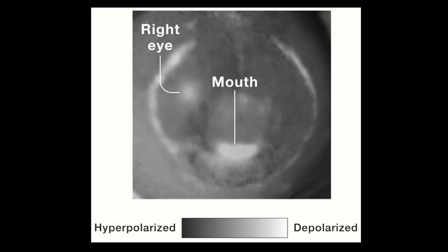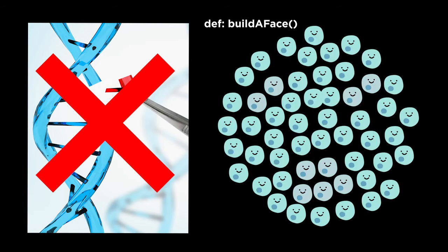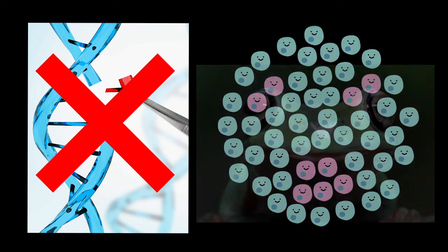Certain distributions instruct cells to behave a certain way. Bioelectricity is like the software of the cell. To reprogram a cell, you'd no longer need to micromanage changes in the DNA, the hardware. You'd simply have to call a specific bioelectric function, like a software update.